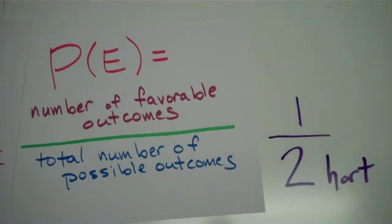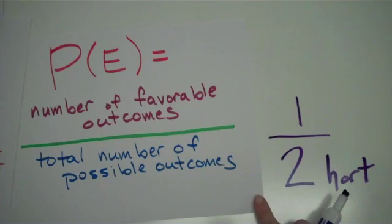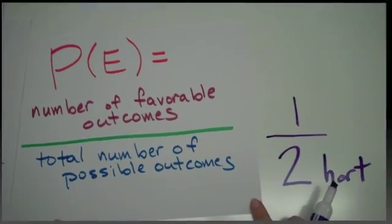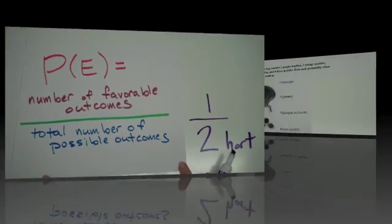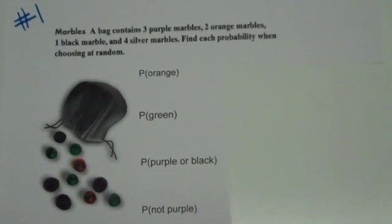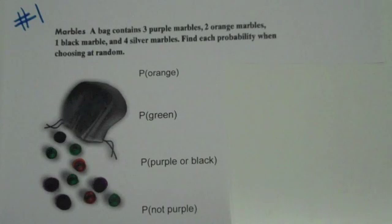The probability of getting tails would also be one out of two. So like I said, this is a little bit of a review for you guys. We're going to do just some basic probability problems. Here's example one: you have a bag that contains three purple marbles, two orange marbles, one black marble, and four silver marbles. They want you to find the probability when choosing at random.